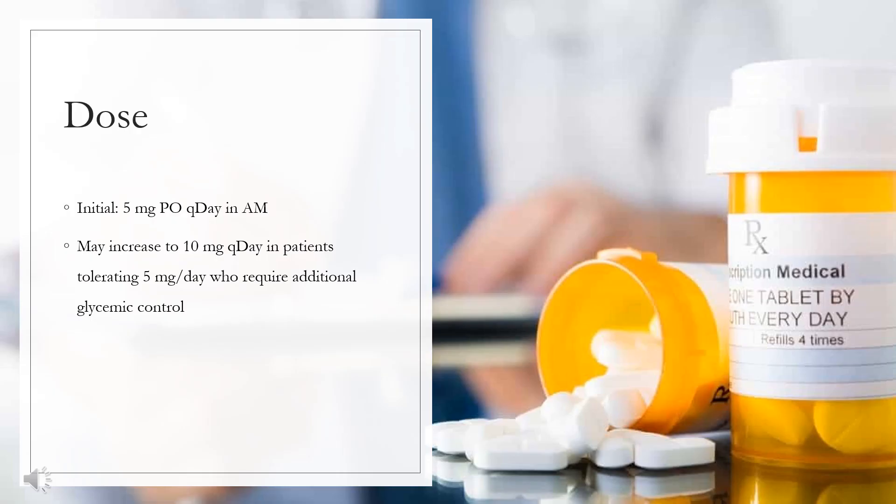Dose — Type 2 diabetes mellitus: Indicated as an adjunct to diet and exercise to improve glycemic control in type 2 diabetes mellitus. Initial dose: 5 mg orally once daily in the morning. May increase to 10 mg once daily in patients tolerating 5 mg per day who require additional glycemic control.